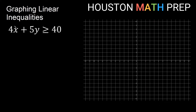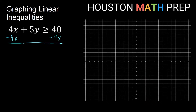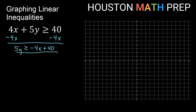In our first example, if we're trying to work from slope-intercept form, we'll need to first solve for y — that means get the y by itself. We'll subtract the 4x term over to the other side, and that will give us 5y is greater than or equal to negative 4x plus 40. Then we divide everything by 5, giving us y is greater than or equal to negative 4/5 x plus 8.